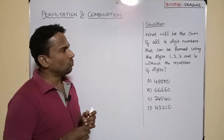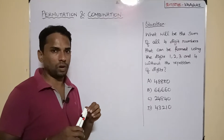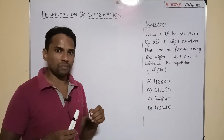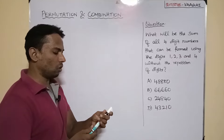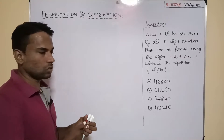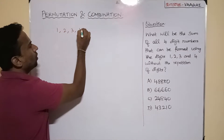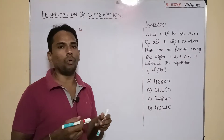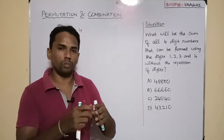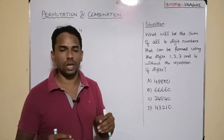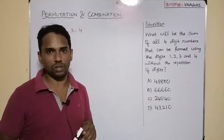We are going to find the sum of all four-digit numbers that we can form using the digits 1, 2, 3 and 4. We have four digits in total. We need to form all possible four-digit numbers and find the sum of all those four-digit numbers. This is going to be the question.